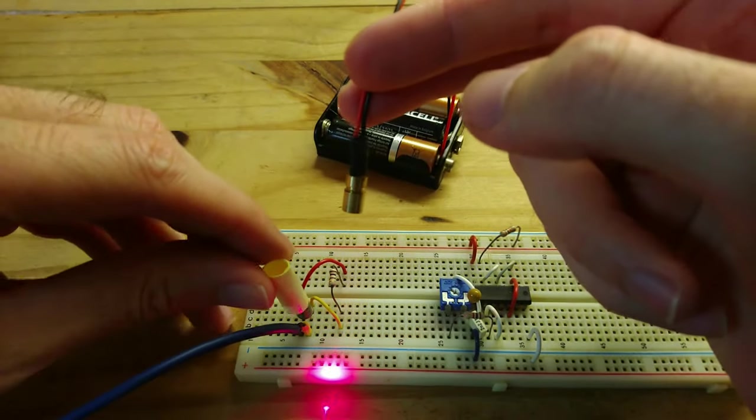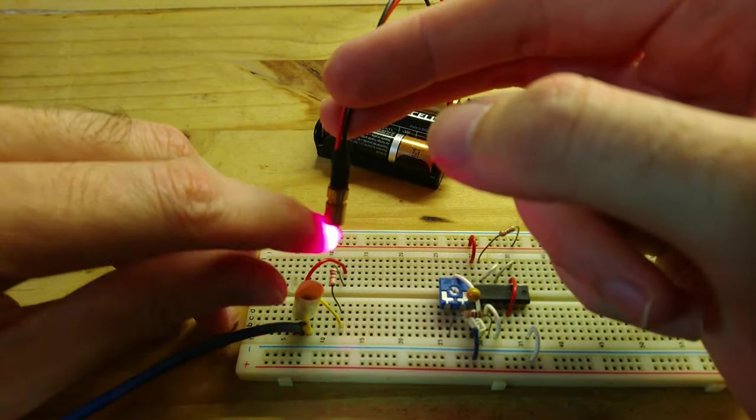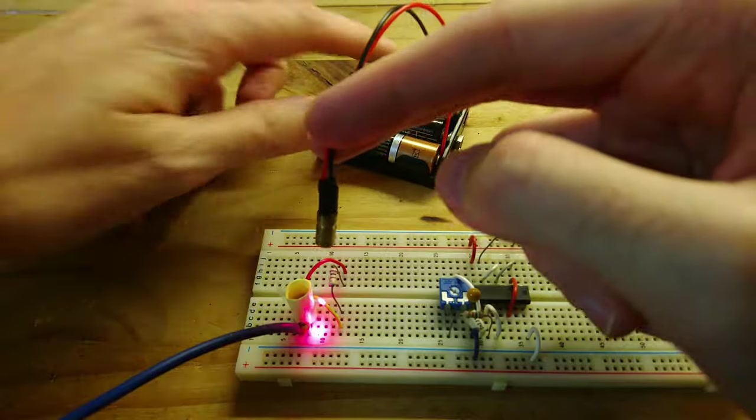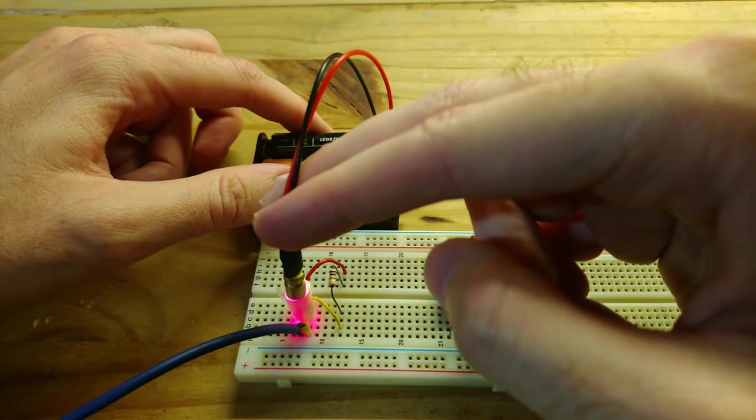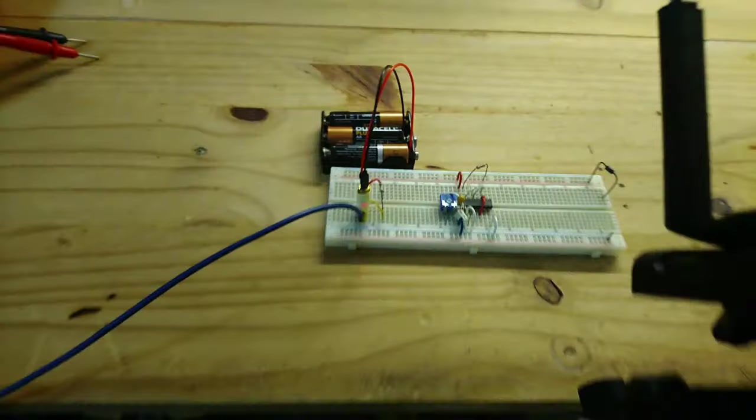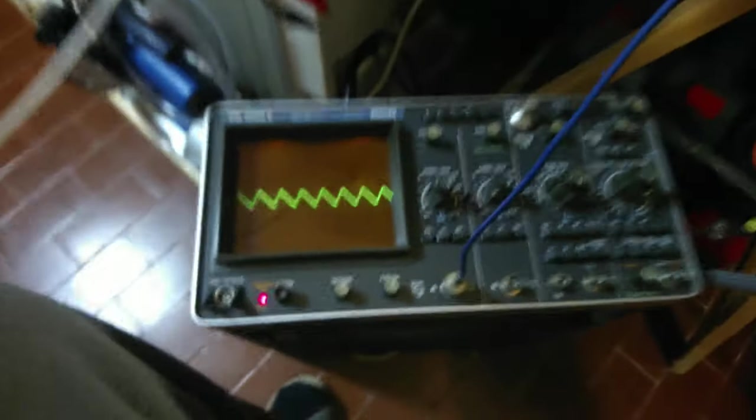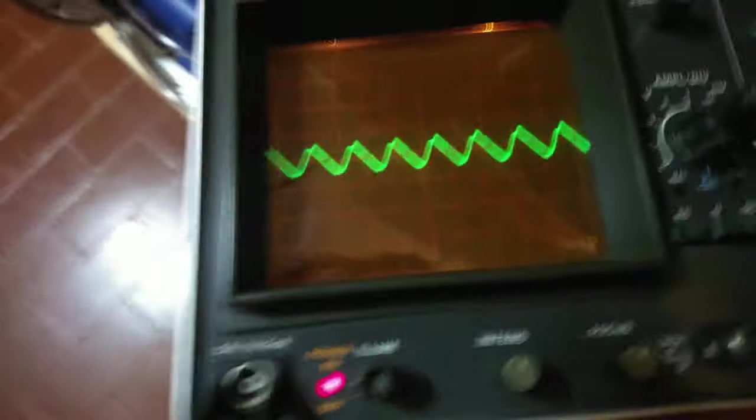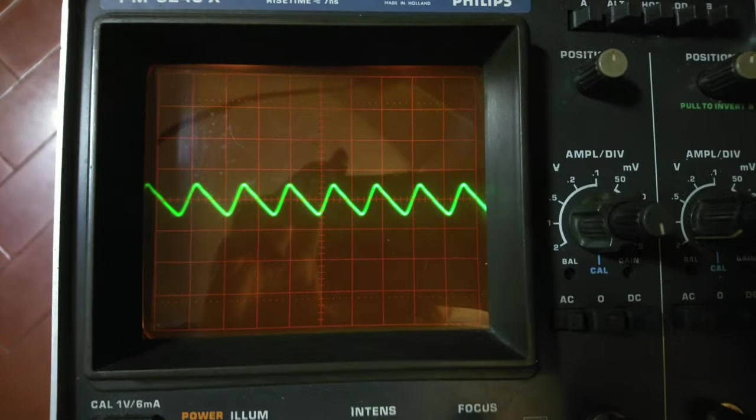I'm going to use a piece of tubing in order to sort of align the laser diode on top of the photodiode to the oscilloscope. Yep, it is oscillating, as you can see.